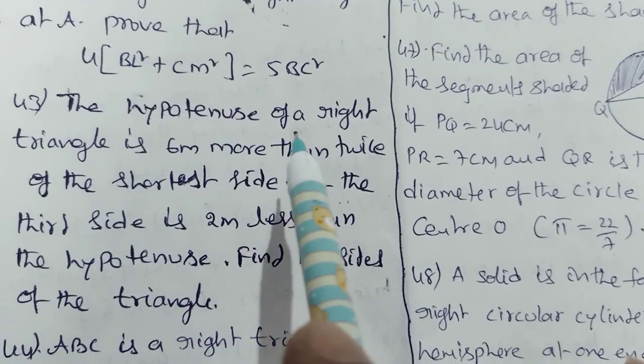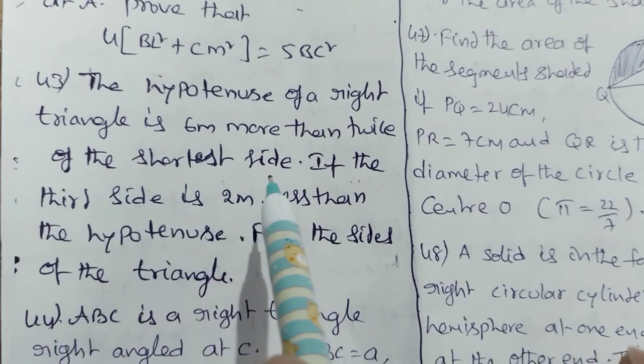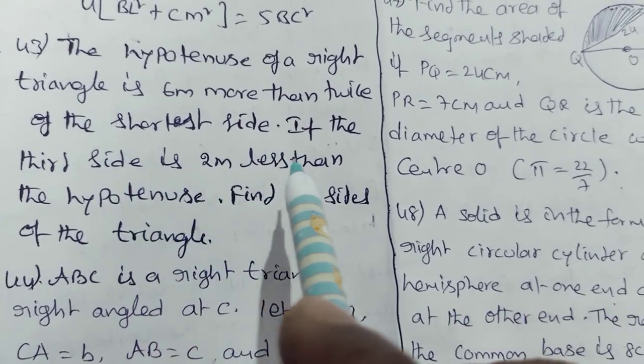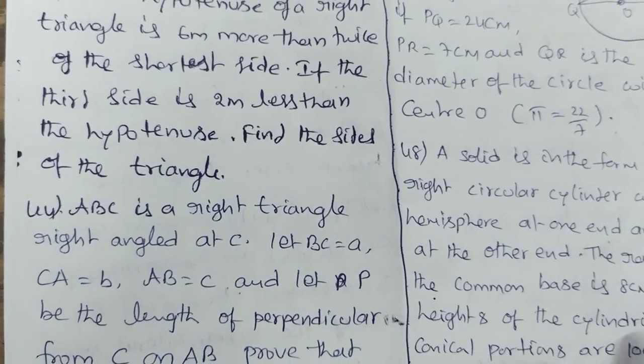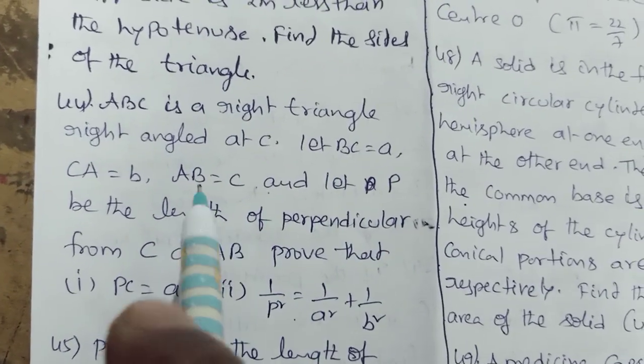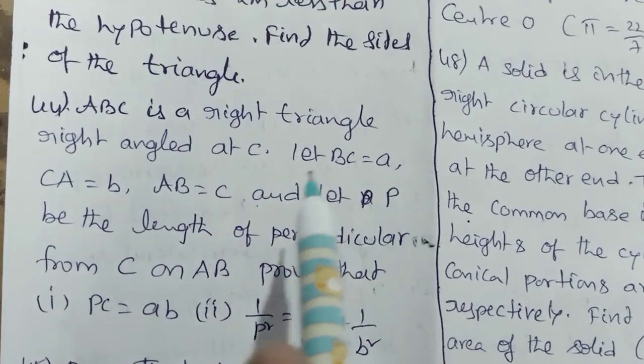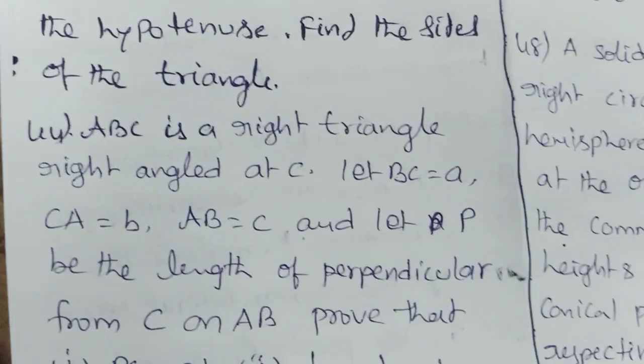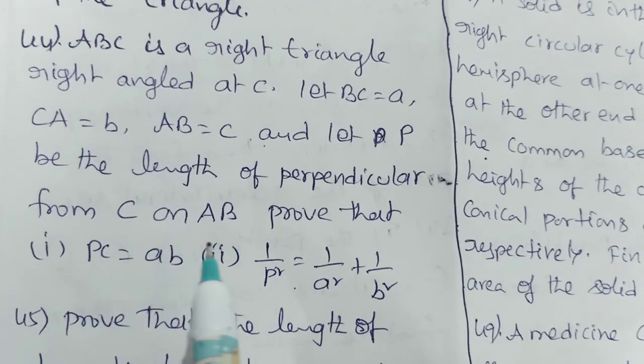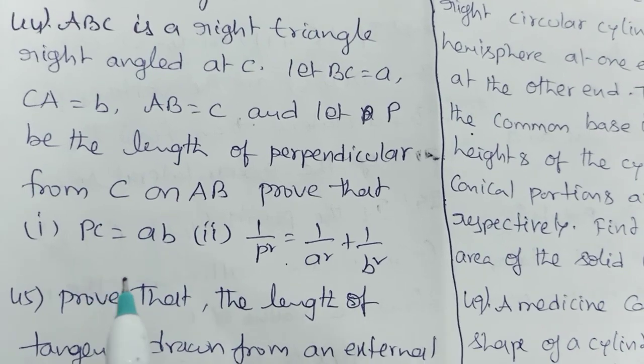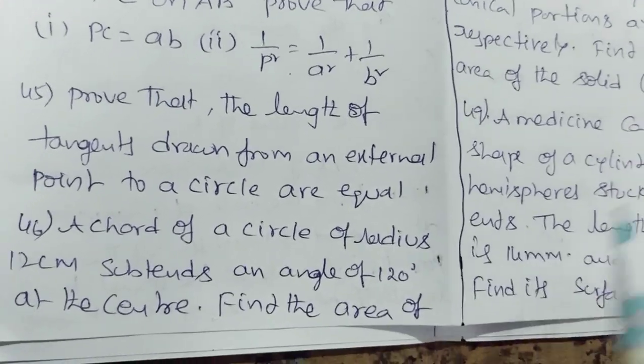BL and CM are medians of a triangle ABC right angle at A. Prove that 4 of BL square plus CM square equal to 5 BC square. The hypotenuse of a right triangle is 6 m more than twice the shortest side. If the third side is 2 m less than the hypotenuse, find the sides of the triangle. ABC is a right angle triangle at C. Let BC equal to small a, CA equal to small b, AB equal to small c, and let P be the length of the perpendicular from C on AB. Prove that 1 by P square equal to 1 by A square plus 1 by B square.